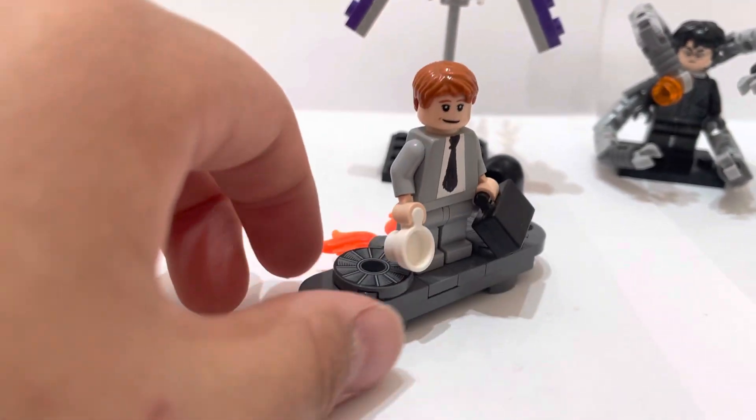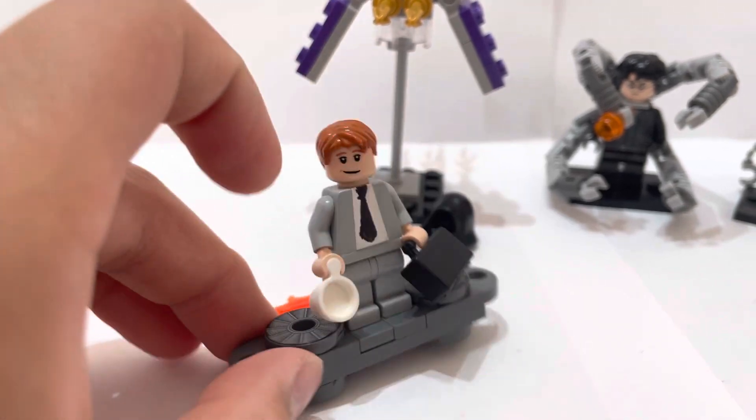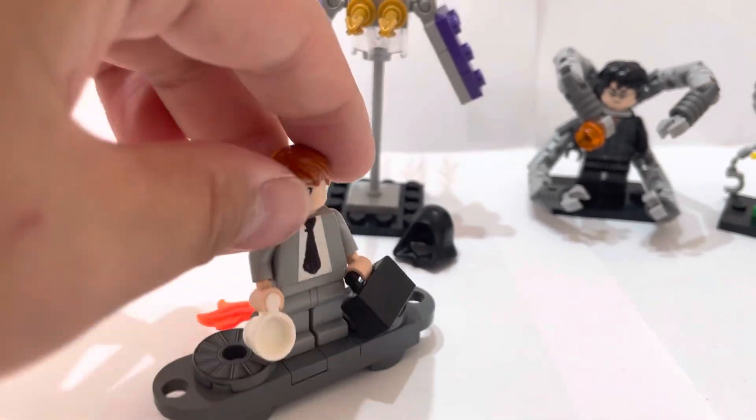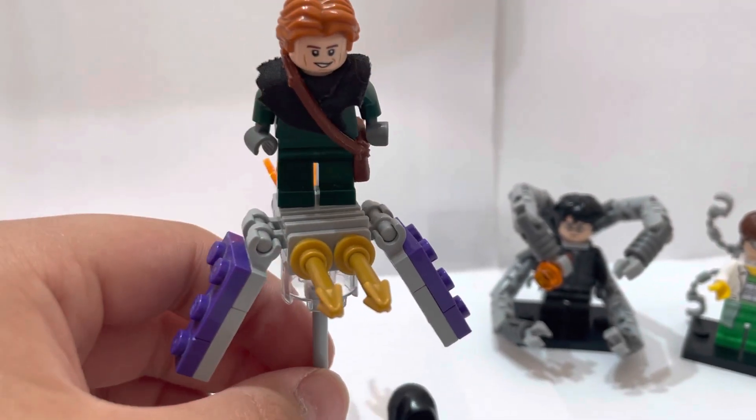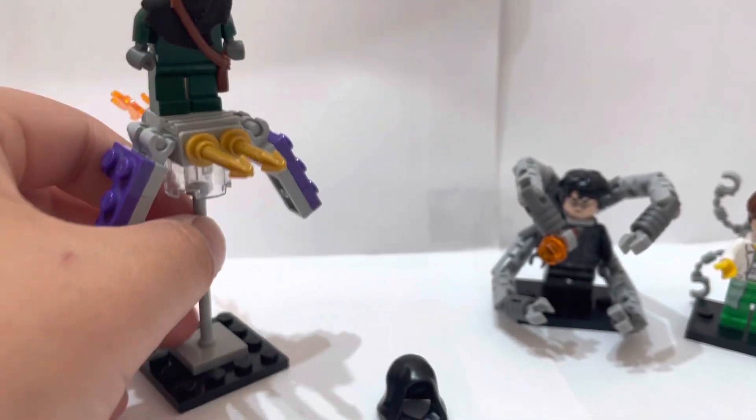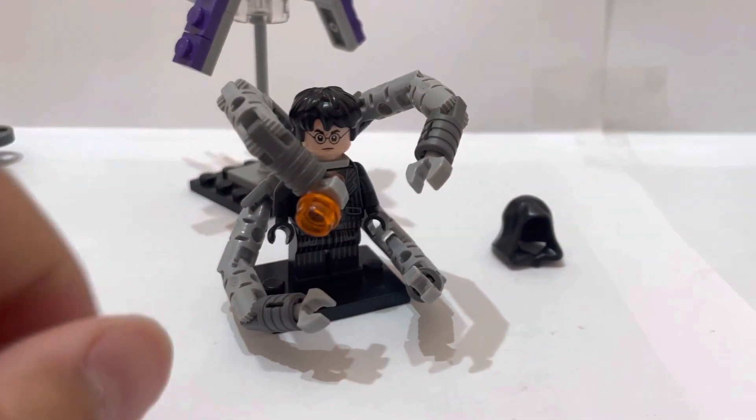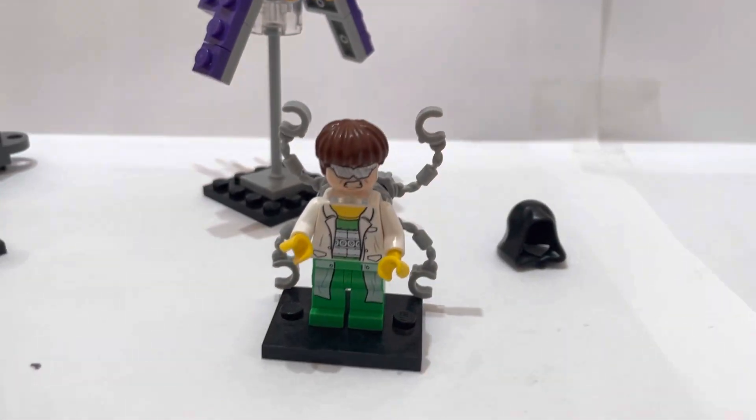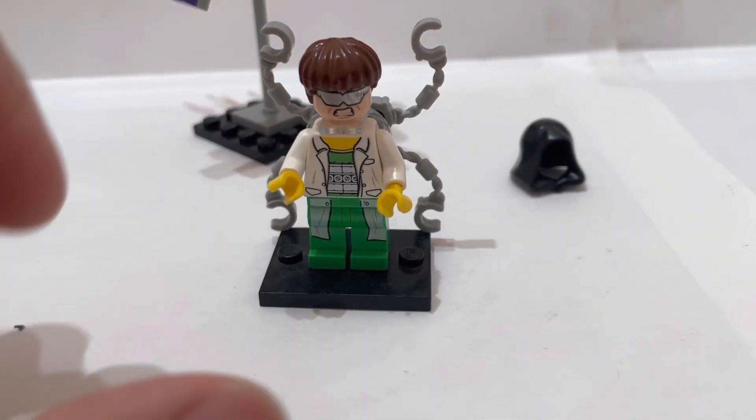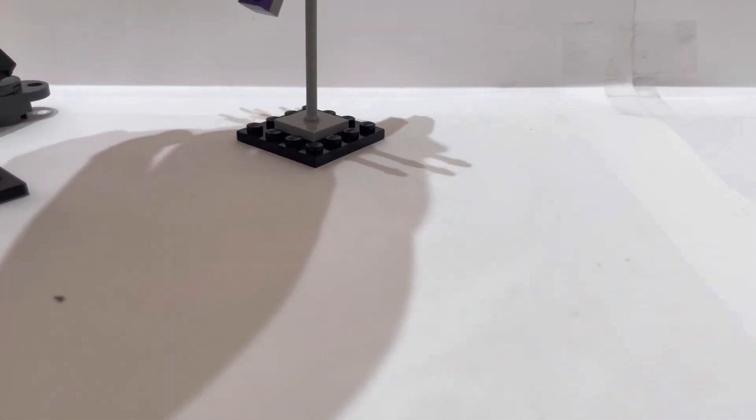Then the Green Goblin on his glider with the spikes. Then we've got Doc Ock with his cigar and his octopus appendages. And then we've got the comic book Doc Ock. Now that's just a brief summary of all of them. Now I'm going to show them in detail.